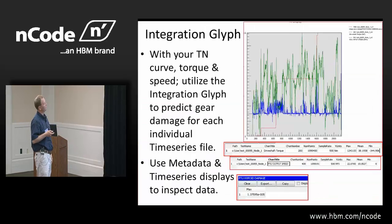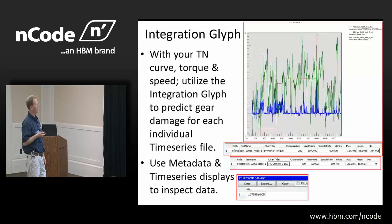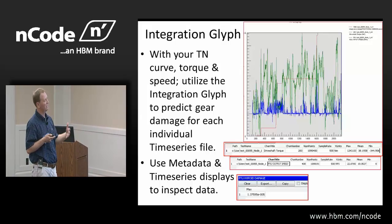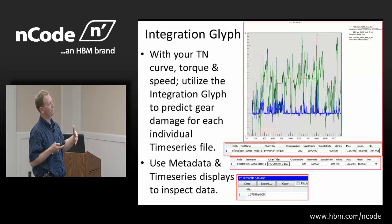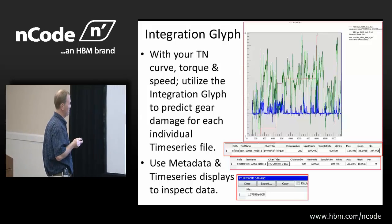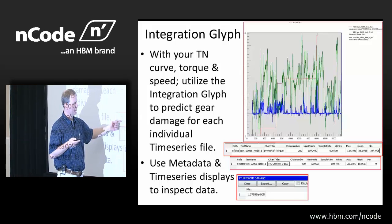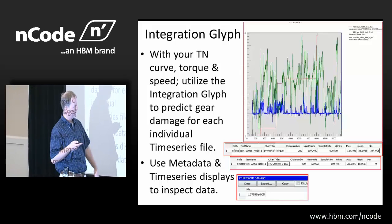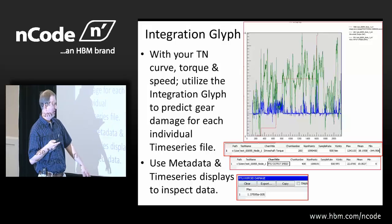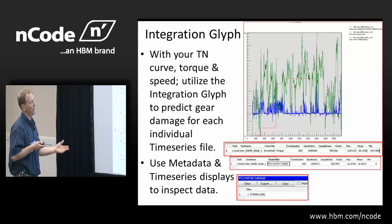Now I get into the integration glyph. With my TN curve, I take torque and speed into the integration glyph to predict the gear damage for each individual time series event. The old method was to build the whole histogram, put all 100 events with their multipliers into a giant histogram, and then calculate the damage. But what I'm doing now is calculating the damage for each event so I can double check my work — does torque make sense, does speed make sense, does the damage make sense? In the metadata display: drive shaft torque max 1243, min negative 345. Drive shaft speed max 22 revolutions per second, and then my gear damage.